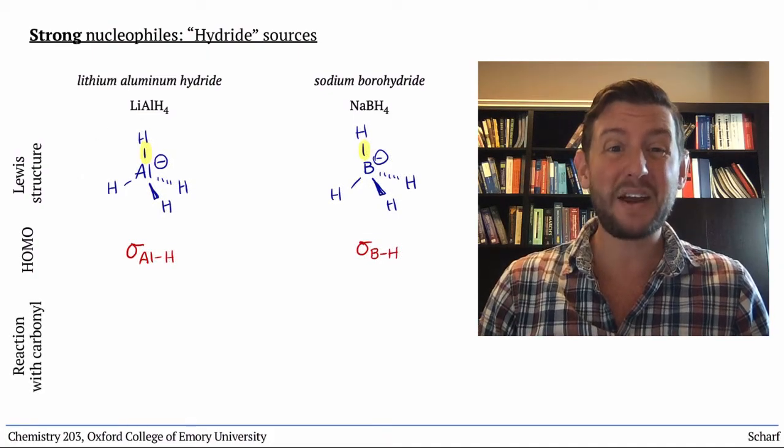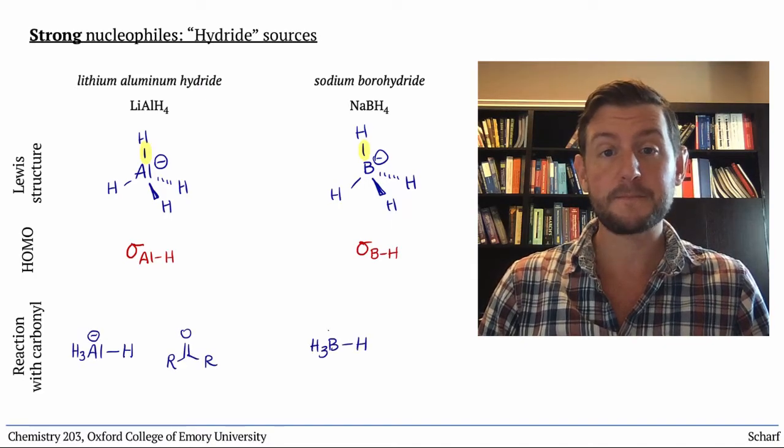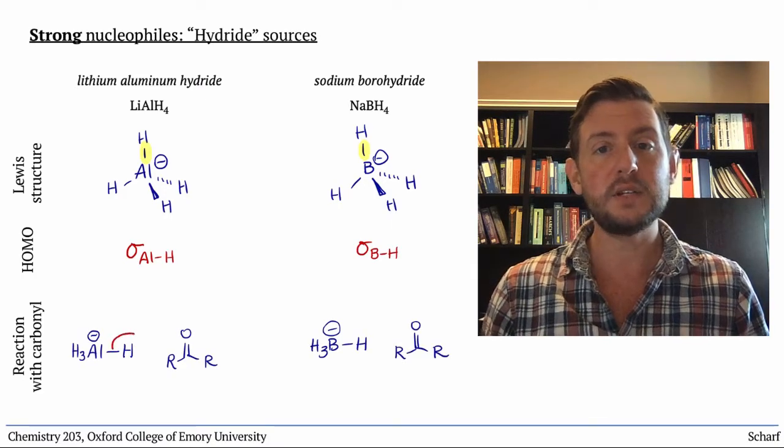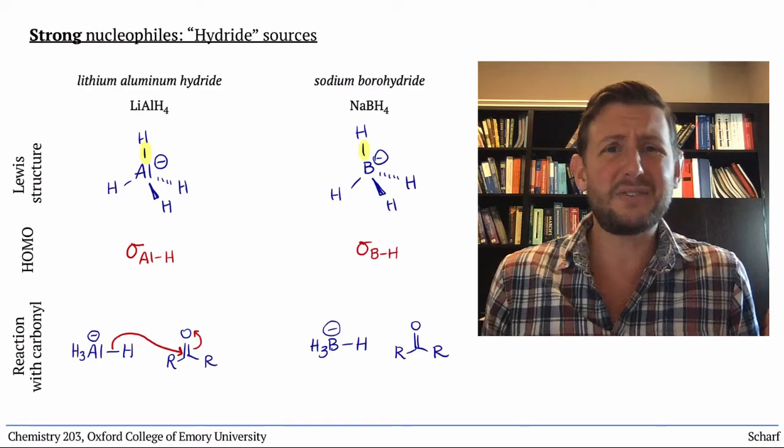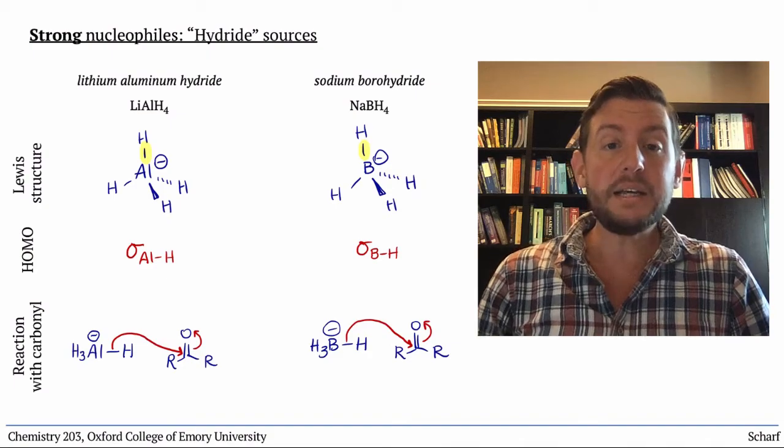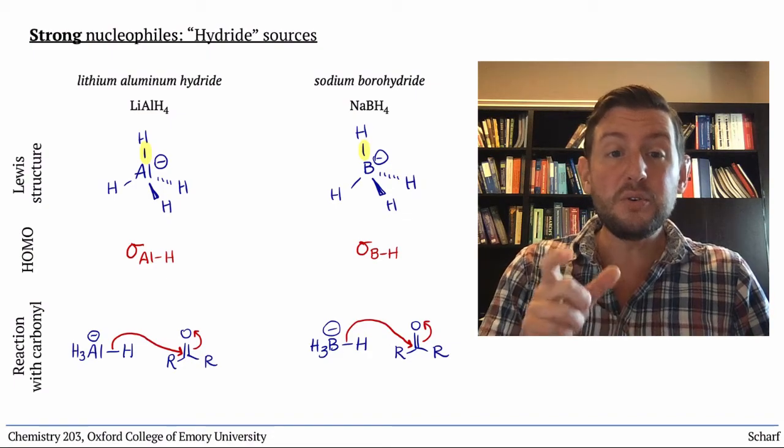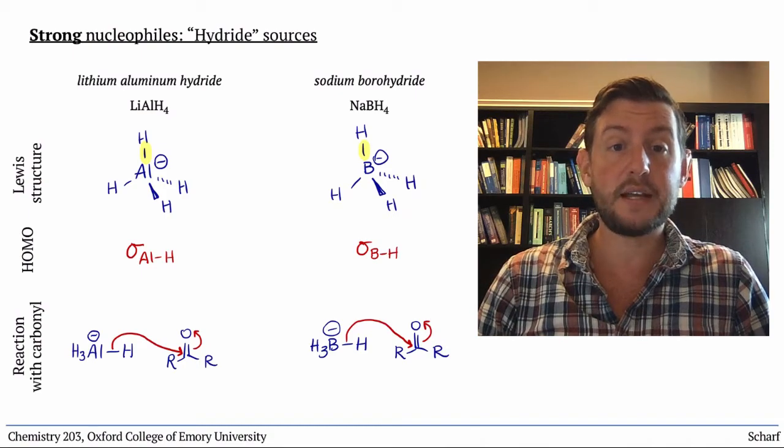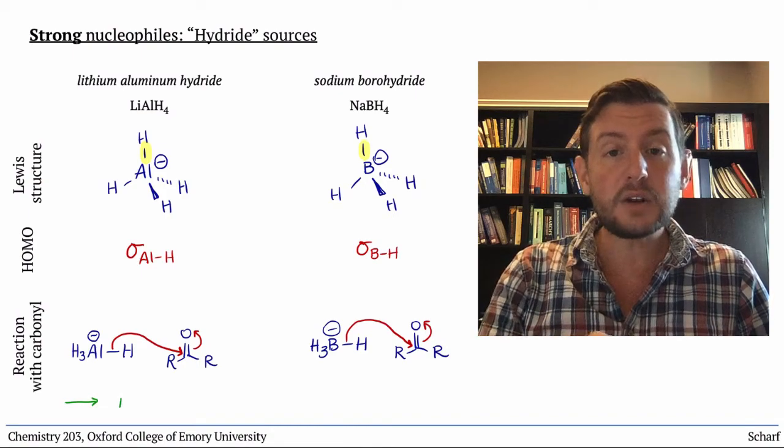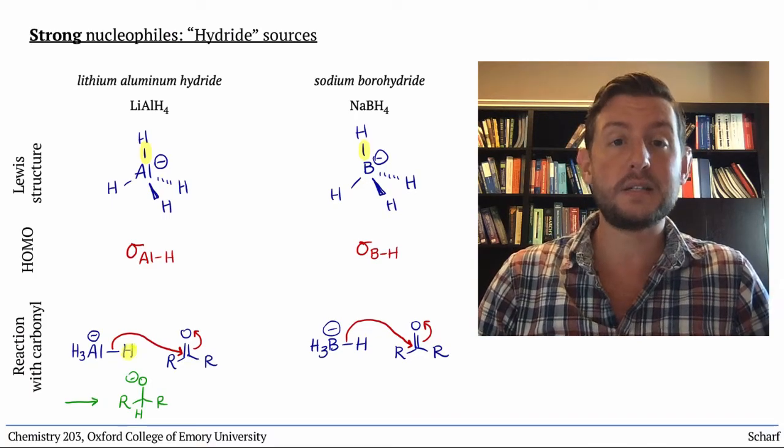When they react with a carbonyl group, it's the bonding pair of electrons that is donated into CO pi star. Now this is a little bit of a weird situation. Where do the electrons end up? Whenever a bonding pair of electrons is donated, a bond is removed from the less electronegative atom, and the electrons go with the more electronegative atom toward their destination orbital.